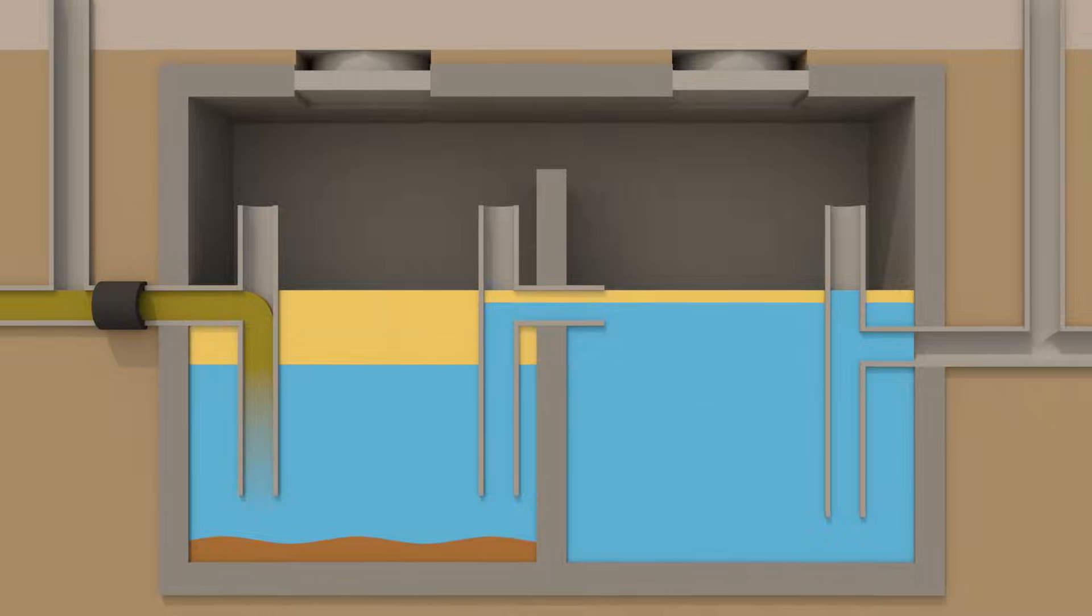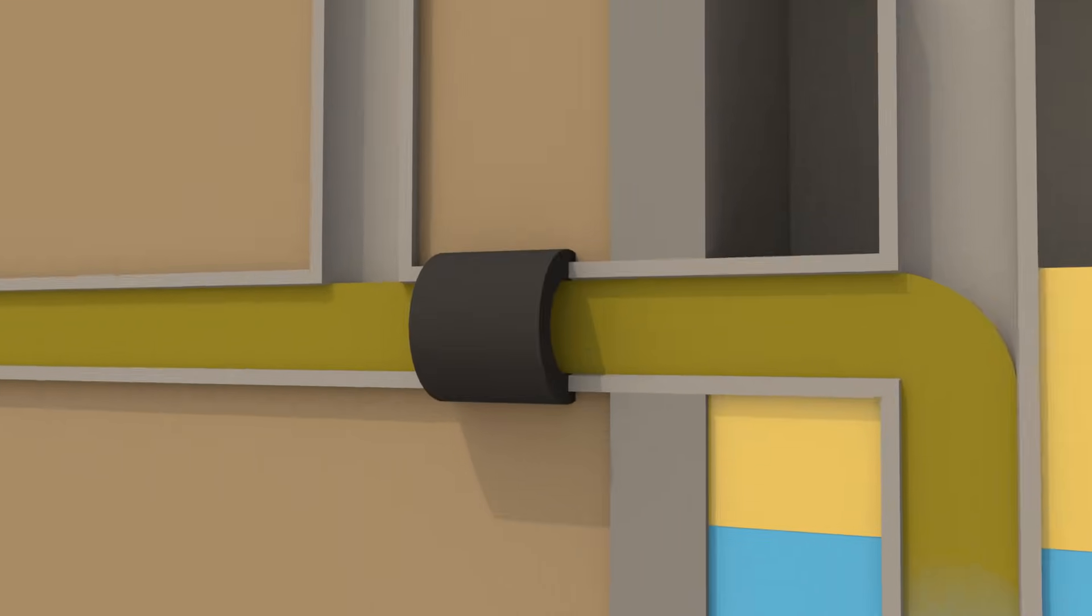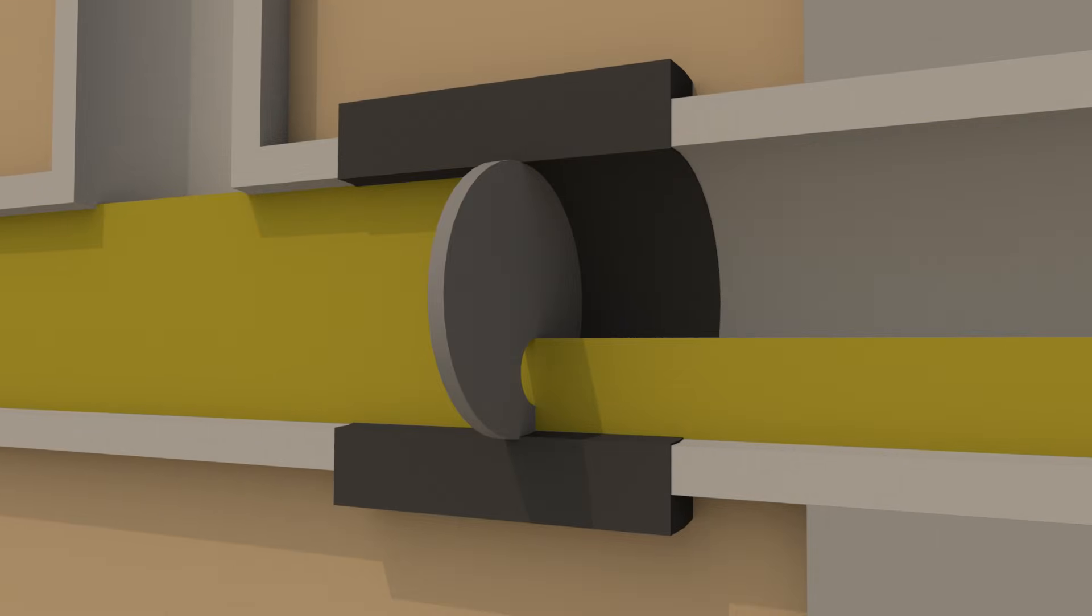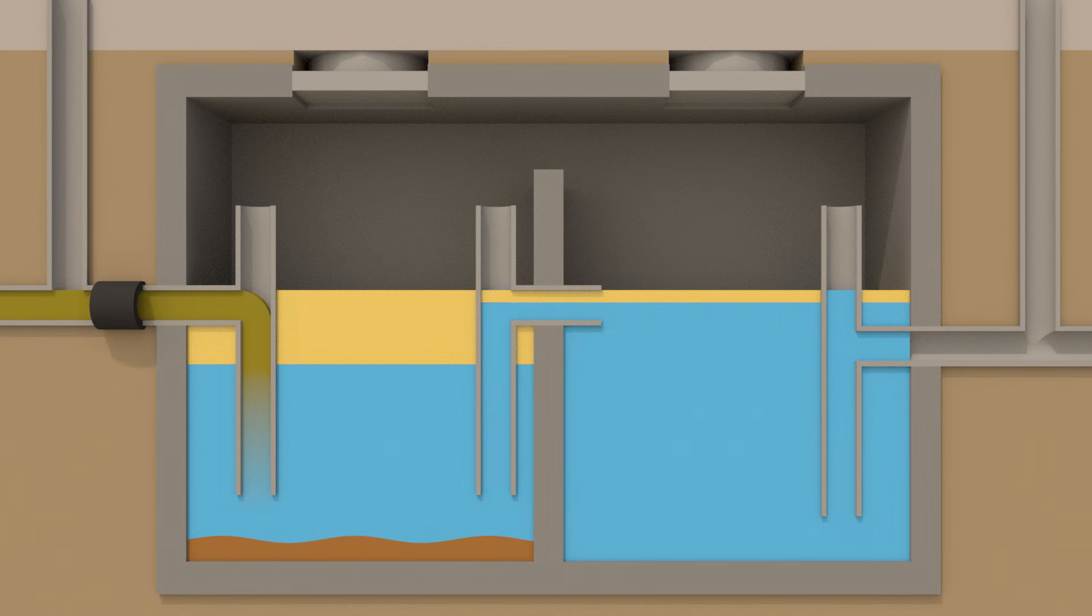Finally, a flow control device is installed on the inlet pipe, regulating the flow to ensure the grease trap is not overwhelmed. The grease trap removes these contaminants from the water, allowing the water to continue through the sewer system.